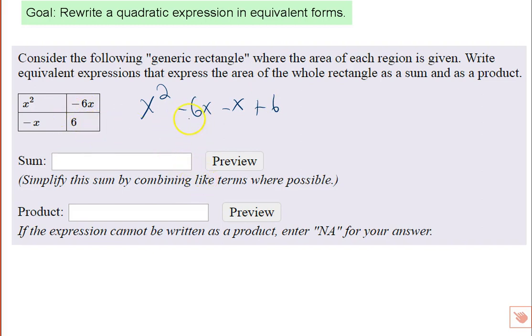And combining like terms, I have an x squared, there's no other squared terms, but the minus 6x and the minus 1x give me a minus 7x, and then I have a plus 6. So I would have x squared minus 7x and plus 6. That is the area of this rectangle.